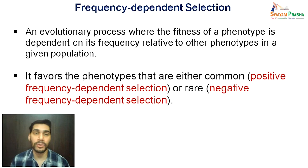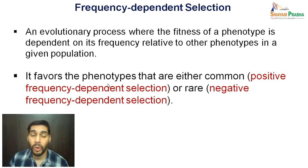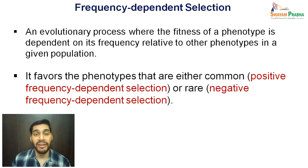Moving ahead, let us now talk about frequency dependent selection. Frequency dependent selection is an evolutionary process where the fitness of a phenotype is dependent on its frequency relative to other phenotypes in a given population. It favors phenotypes that are either common — a sort of positive frequency dependent selection — or it may favor phenotypes that are rare — a sort of negative frequency dependent selection. So here, selection depends on frequency.